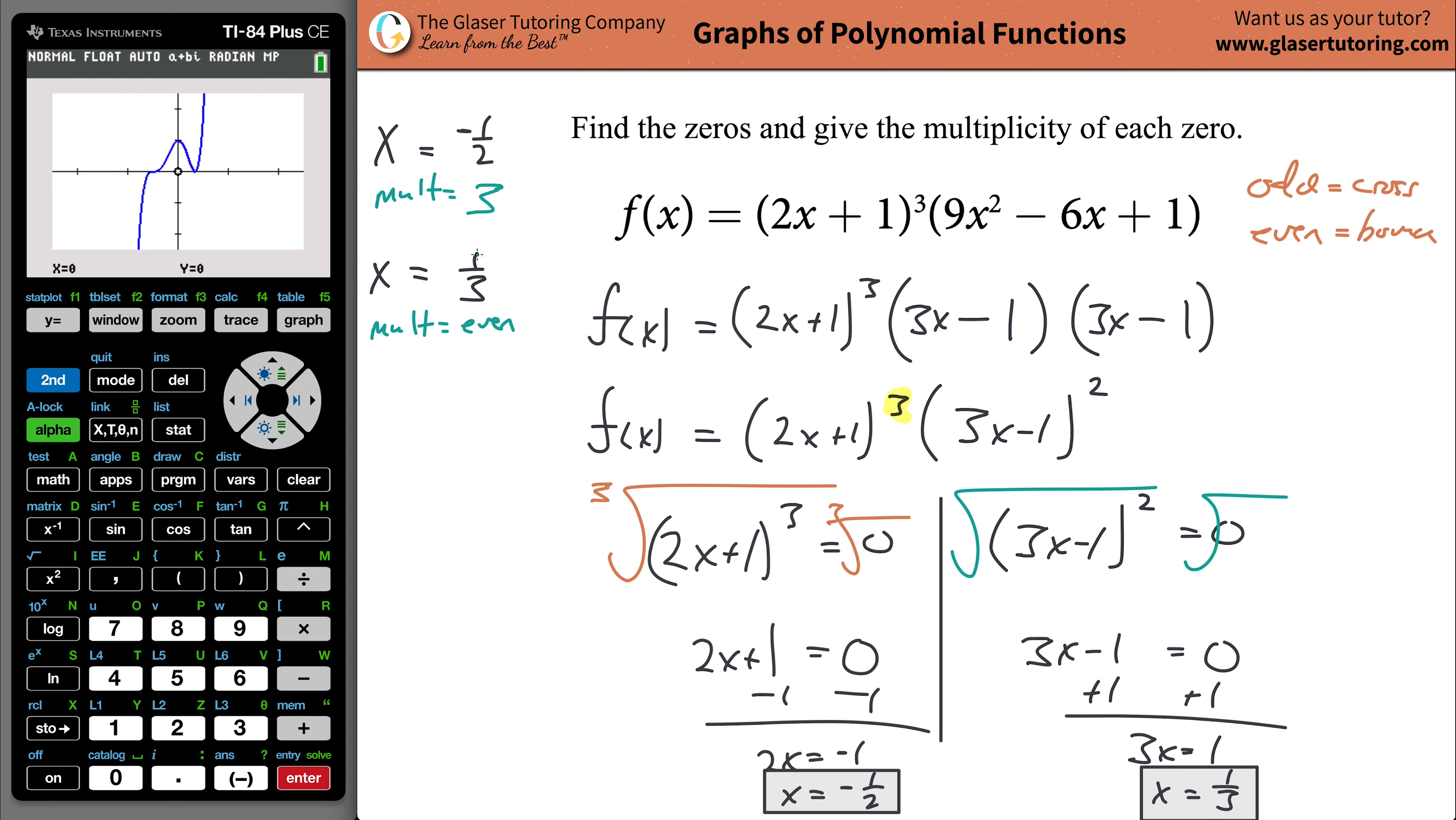Similarly, when we look at the x value, when we look at the 0, the 0 of the function where the function's value is 0, x was equal to 1 third. We notice that this particular 0 came from this factor. It came from this factor, and that factor had an exponent of positive 2, which is even, which is what we said it should be, and that's 2. And that's how you do it.